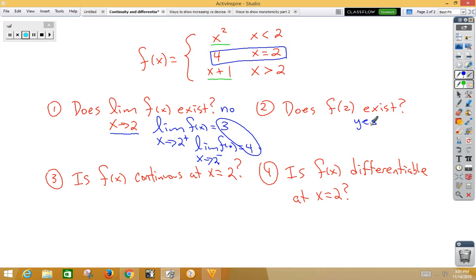Number 3. Is f of x continuous at x is 2? Since the two-sided limit does not exist, we can say this is discontinuous because the two-sided limit does not exist.